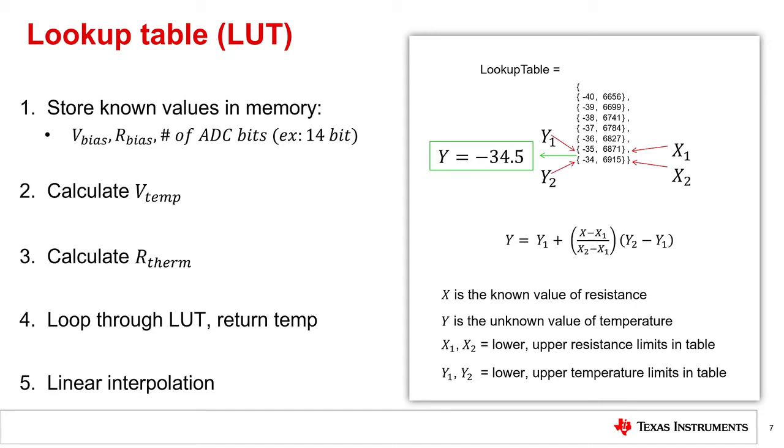This method works very well with linear PTC thermistors due to their linear characteristic across temperature. It uses the equation on the right to calculate how far the measured resistance value is from the closest resistance values in the lookup table. Then it applies that same ratio to the corresponding two temperature values in order to approximate and return a more accurate temperature in a floating point notation.